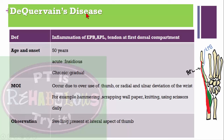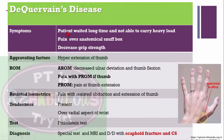On observation, swelling is present at the lateral aspect of the thumb. Symptoms include inability to carry heavy loads if the condition has persisted, pain over the anatomical snuff box, and decreased grip strength. Thumb extension can aggravate symptoms. Active range of motion for thumb flexion and ulnar deviation is decreased. Pain with passive range of motion especially in thumb extension. Resisted isometrics show pain with resisted abduction and extension of the thumb. Tenderness is present over the radial aspect of the wrist.